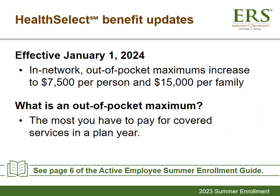The Health Select of Texas and Consumer Directed Health Select health plans' total annual in-network out-of-pocket maximums — medical and pharmacy combined — will increase to $7,500 per individual, up from $7,050, and $15,000 per family, up from $14,100, to align with the IRS maximums. This change is effective January 1st, 2024. Since 2018, ERS health plan premiums have not increased more than 1%, and coverage has not decreased.